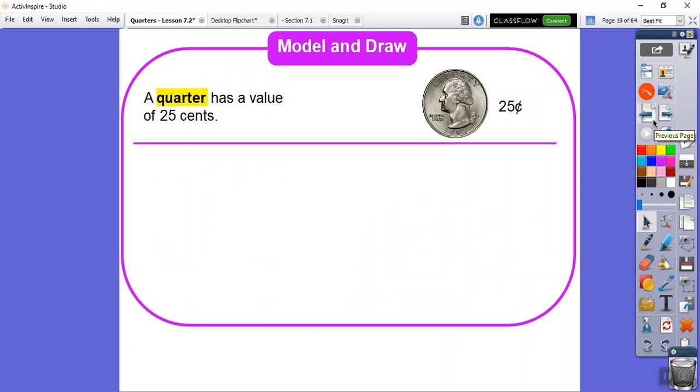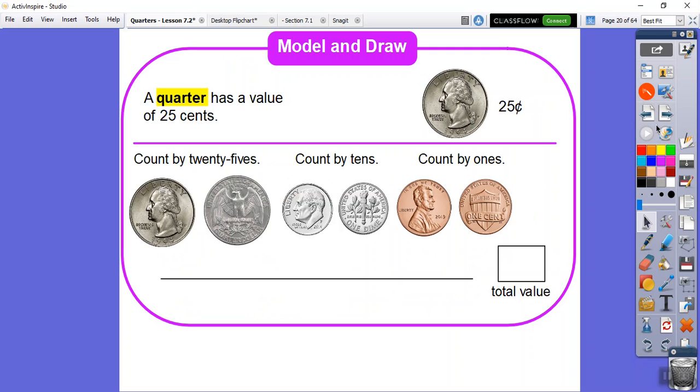A quarter has a value of 25 cents. There's our magic quarter right there. It says we're going to count the total value of all these coins. That's what the rest of this lesson is. I'm going to separate them up and do one at a time. Remember quarters are 25 cents. So it says count by 25s. This says count by 10s because dimes are 10 cents each. And this says count by ones because pennies are only one cent each.